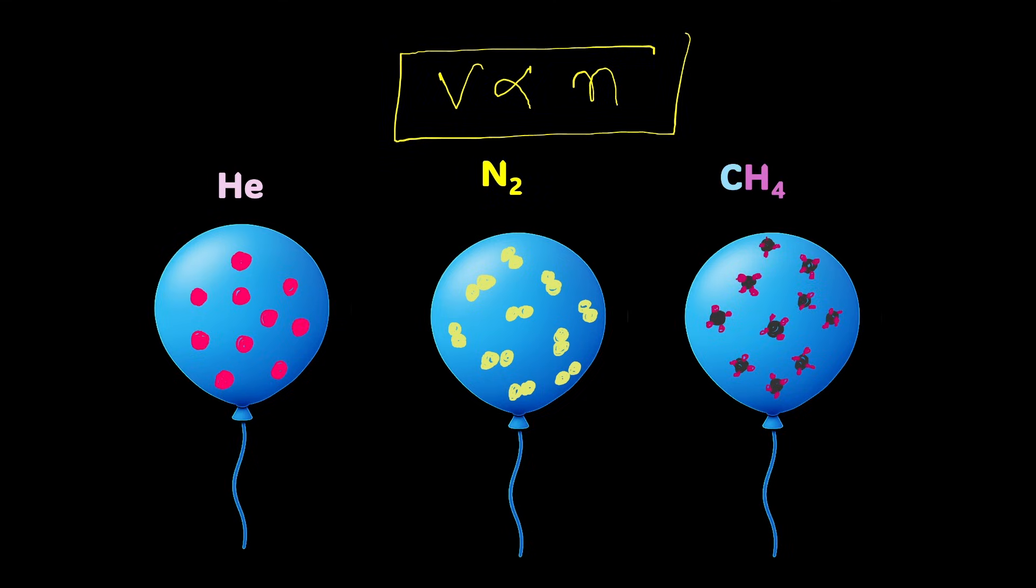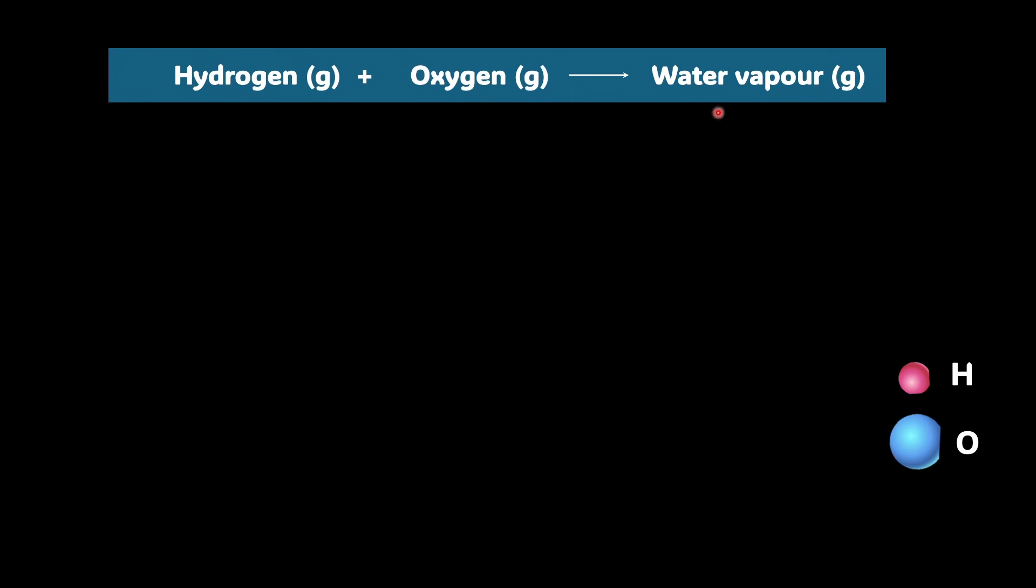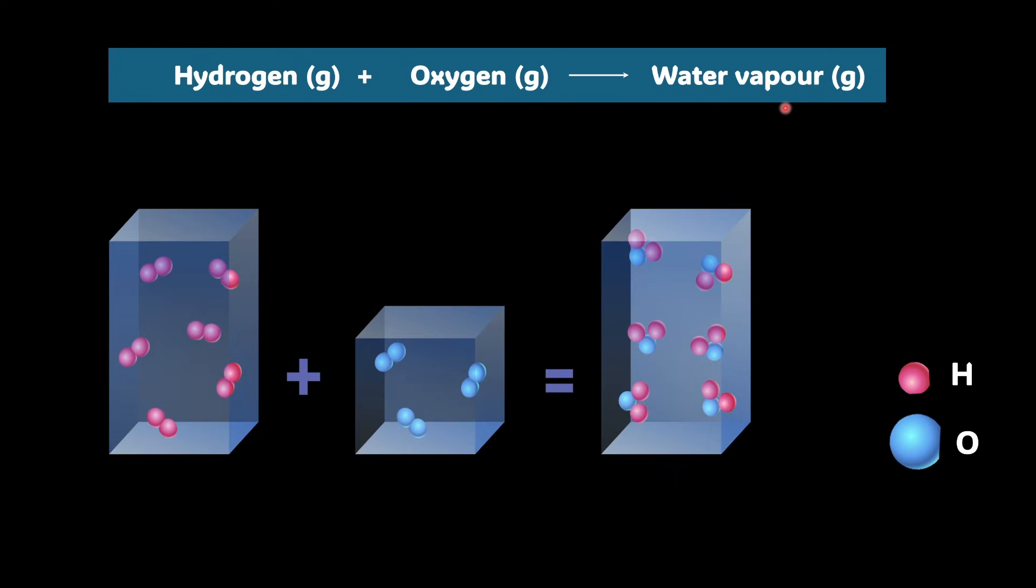Now, let's return to our example of water formation. Here we learn that two volumes of hydrogen and one volume of oxygen combined to form two volumes of water vapour. This is what we found experimentally. And this can now be explained beautifully using Avogadro's idea.